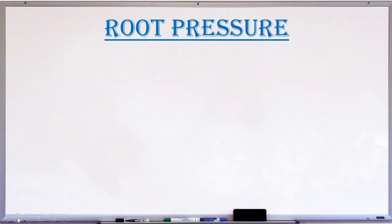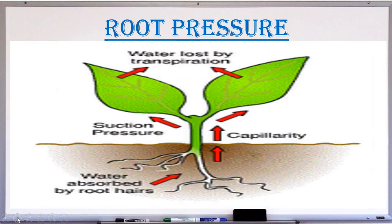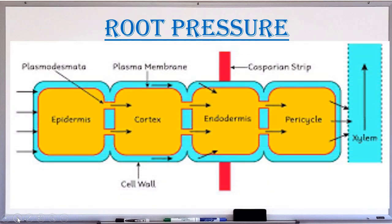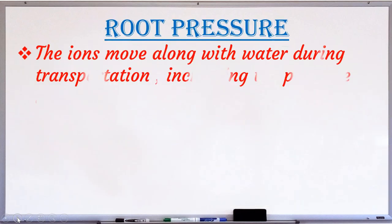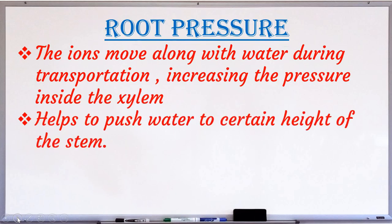Next is the root pressure. In transportation in plants, water movement is a passive transport and movement of ions is an active transport. As we know, ions are charged particles. Due to transpiration or water loss, osmotic pressure is created in the xylem vessels. This osmotic pressure, since it is created in the root, we call it root pressure.